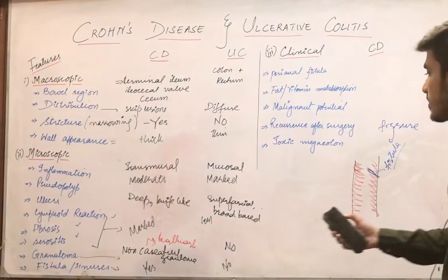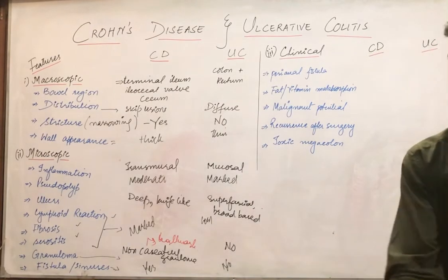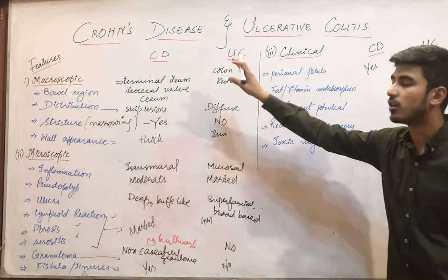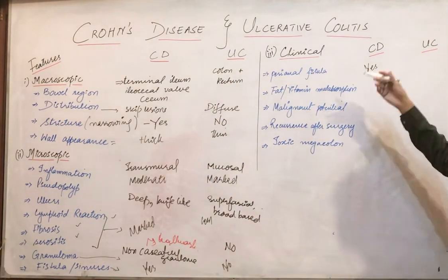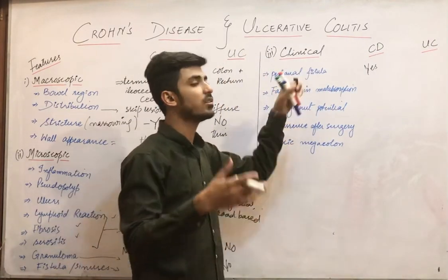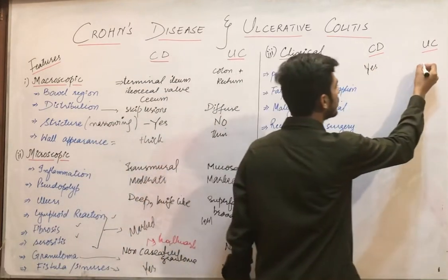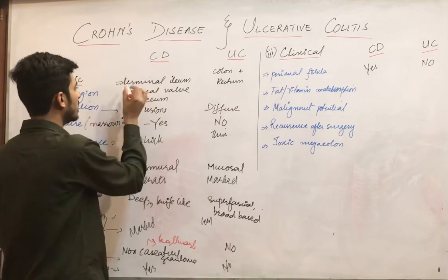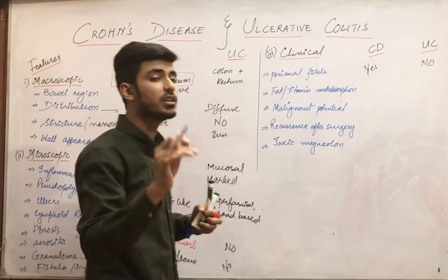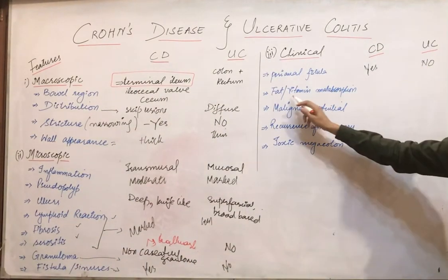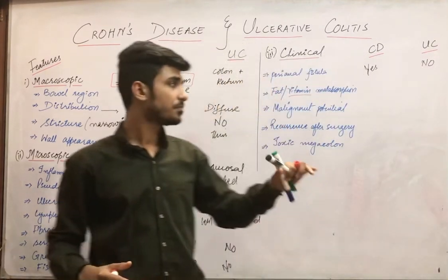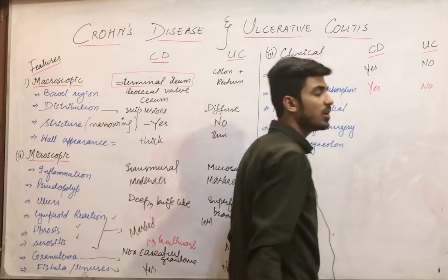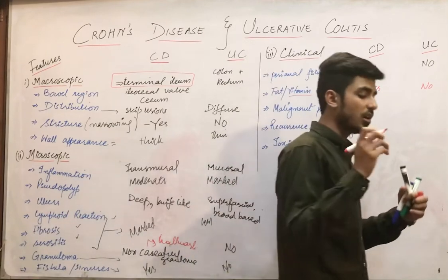Moving to clinical features: perianal fistulas are more common in Crohn's disease, named according to their position around the anal region, while not formed in ulcerative colitis. Vitamin malabsorption occurs in Crohn's disease because it involves the terminal ileum, which is where vitamin B12 is absorbed. Therefore, malabsorption of vitamins and fat occurs in Crohn's disease but not in ulcerative colitis.